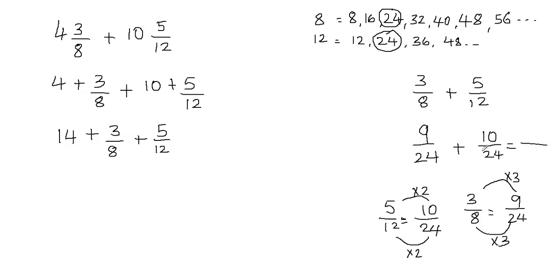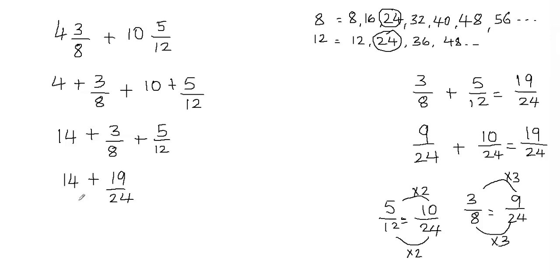Remember, when we add fractions we never add the denominator — the denominator stays 24. We just add the numerators: 9 plus 10 is 19. So 3 eighths plus 5 twelfths equals 19 over 24. Now notice that we have a whole number, 14, and a fraction, 19 over 24. If we combine the whole number and the fraction we get a mixed fraction. So the final answer is 14 and 19 over 24. This is the simplest strategy to add mixed fractions with unlike denominators.